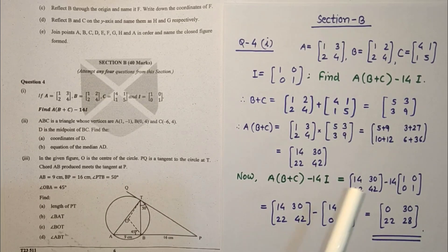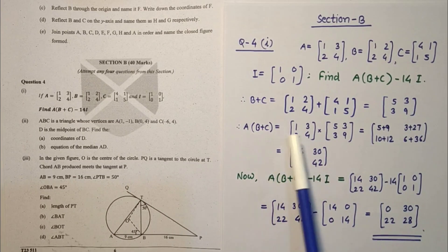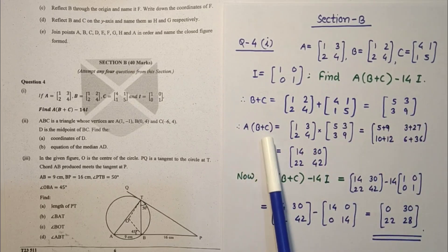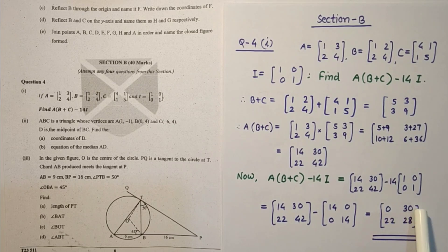Question number 4 first sub part. I did A times B plus C, so first we did B plus C that is 5339, and then A into B plus C. This thing is coming 0 30 22 28, this is the answer.